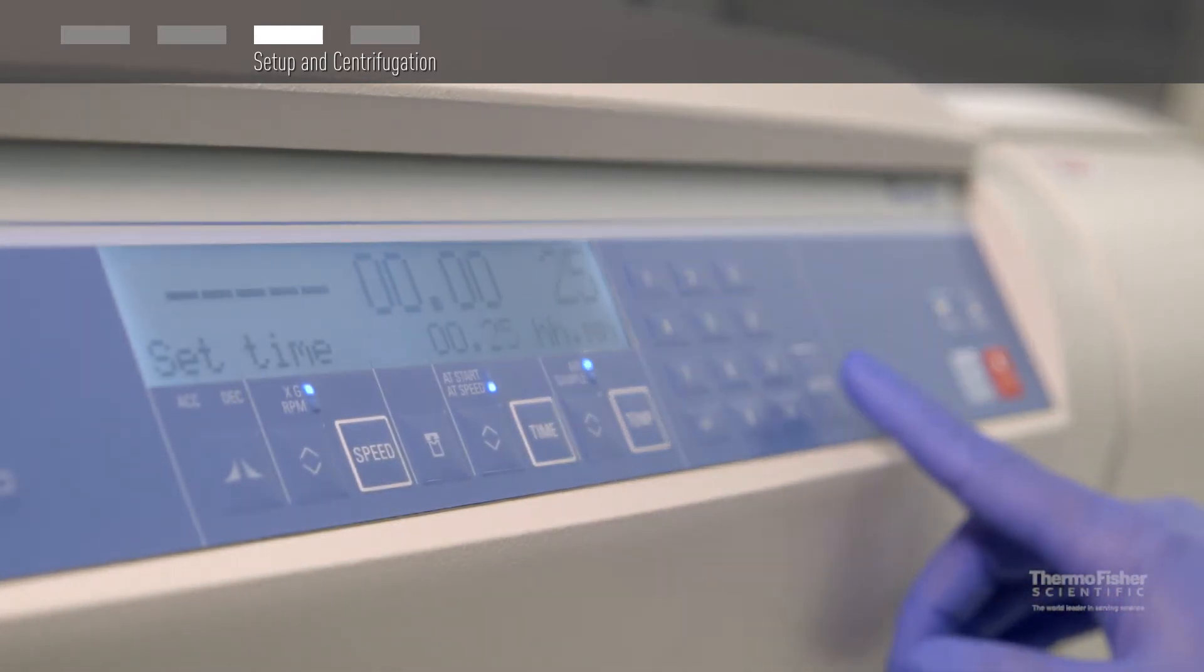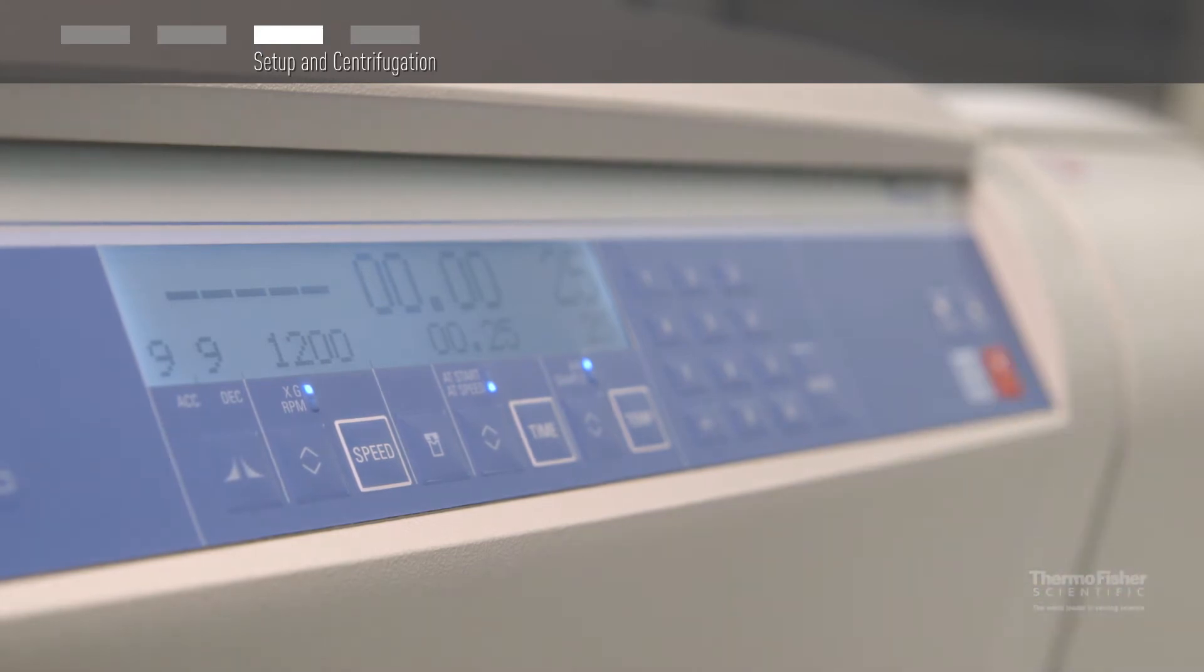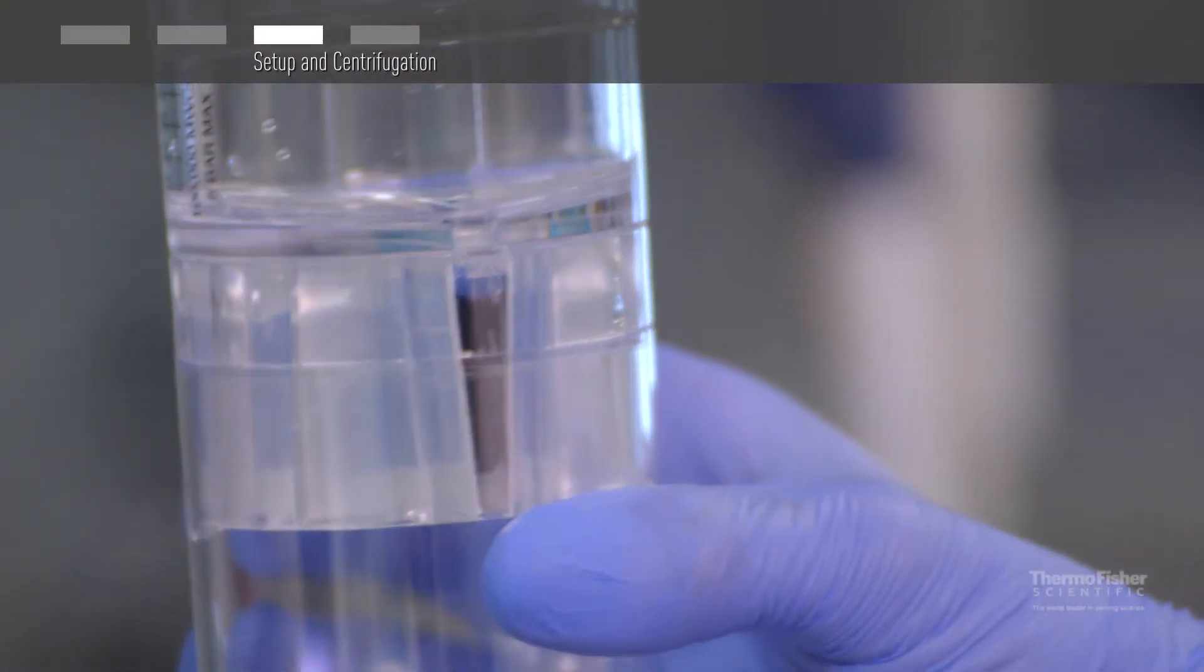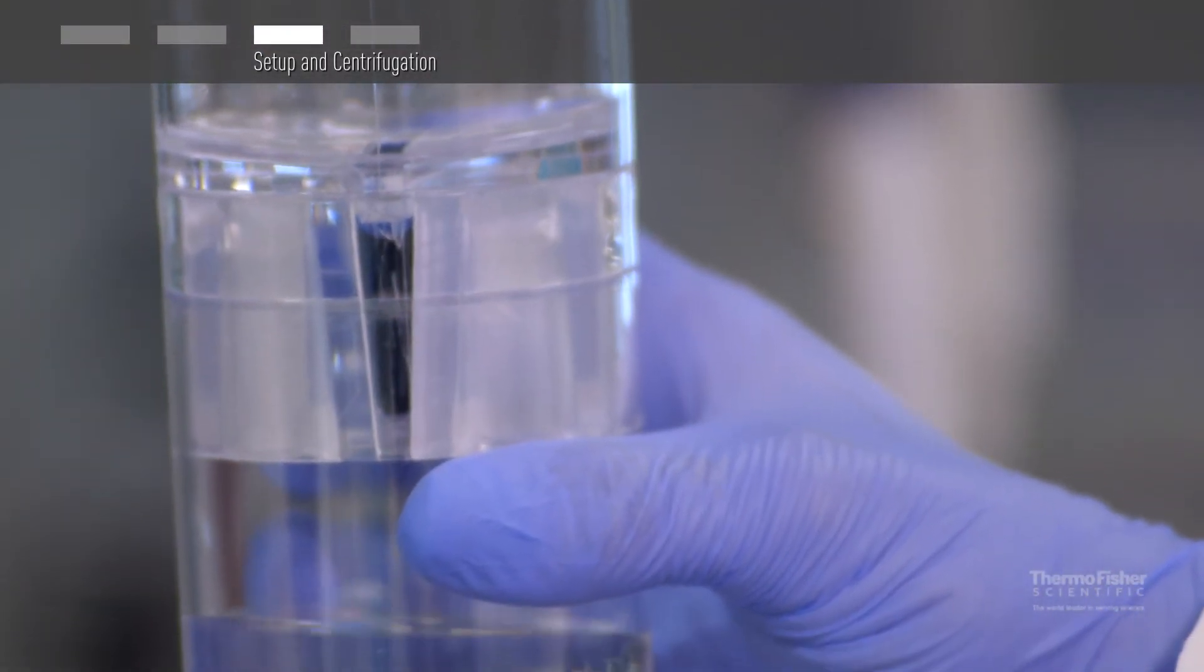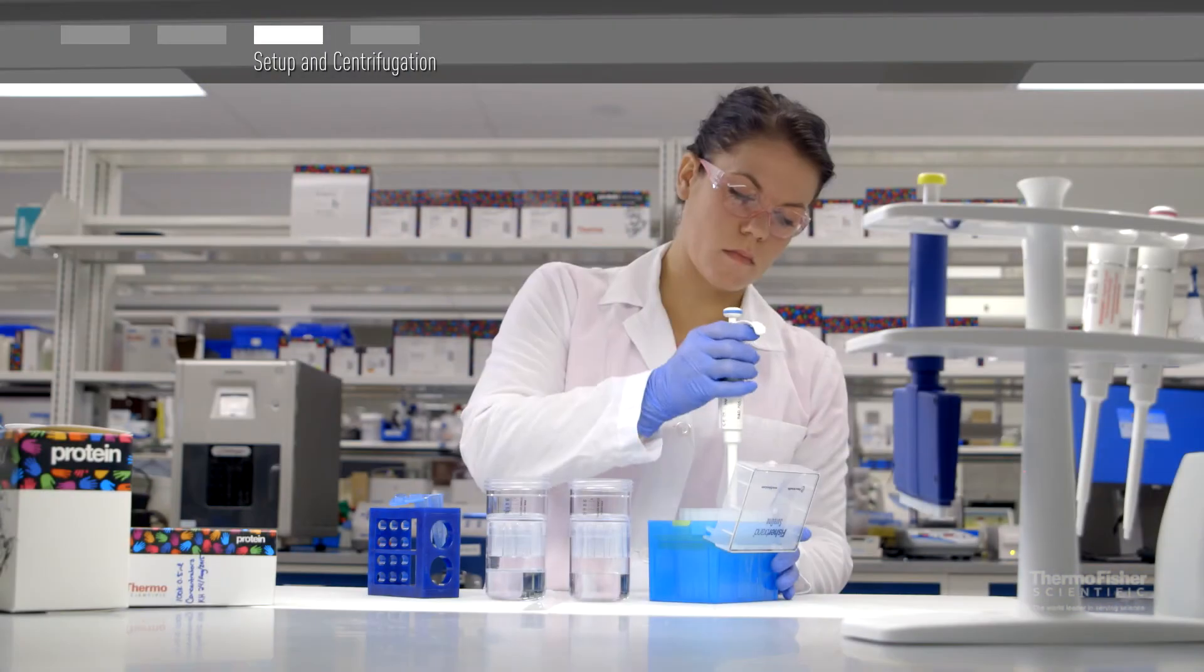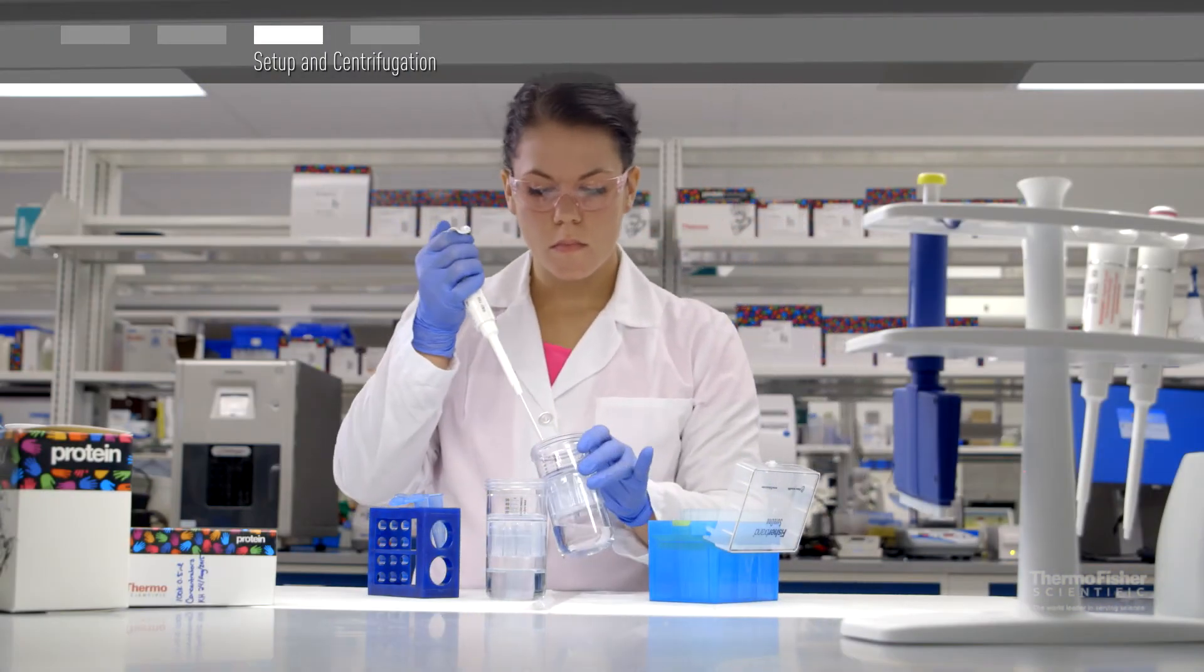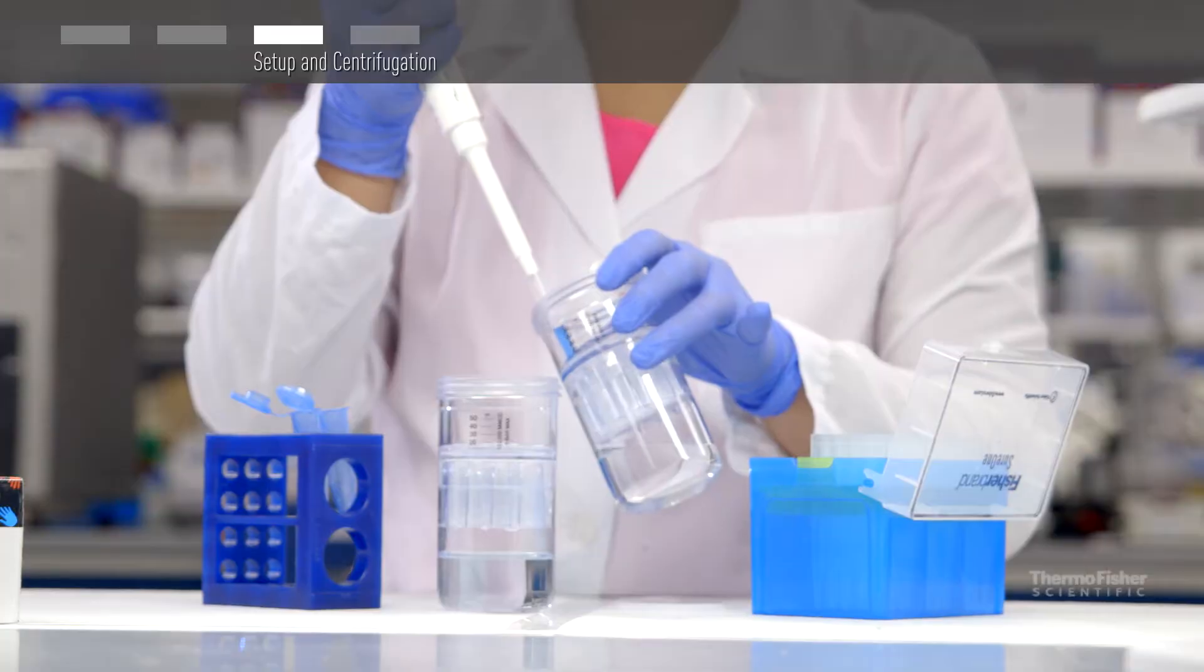The dead stop volume is 350 microliters. The retentate volume can be visually monitored through a clear window with graduations on the side of each device. Use a pipette tip to gently remove retentate from the sample chamber.